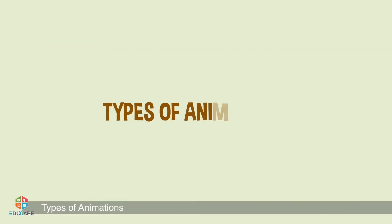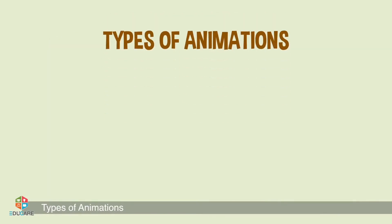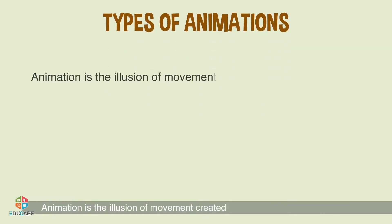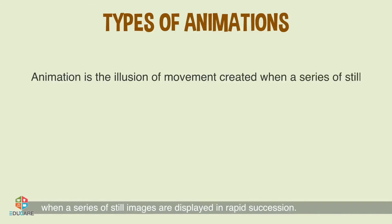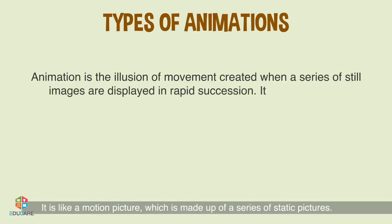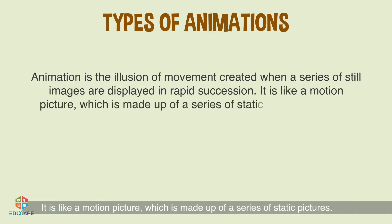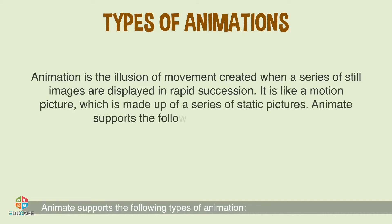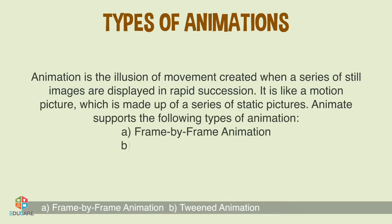Animation is the illusion of movement created when a series of still images are displayed in rapid succession. It is like a motion picture which is made up of a series of static pictures. Animate supports the following types of animation: frame-by-frame animation and tweened animation.